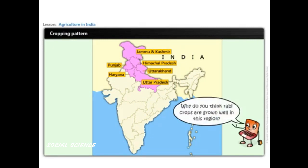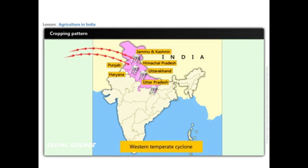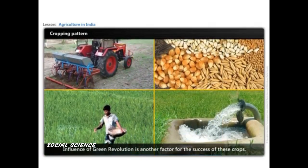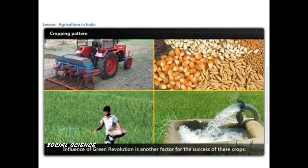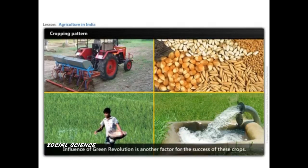Rabi crops grow well in this region because the availability of precipitation during winter months due to western temperate cyclones helps crop growth. The influence of the Green Revolution is another factor for the success of these crops.